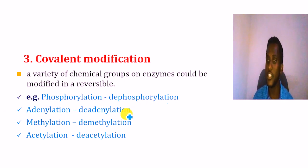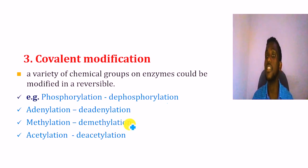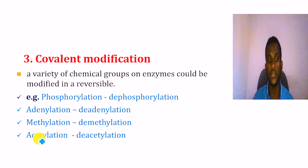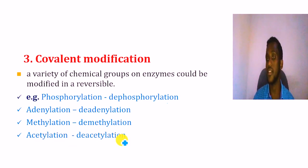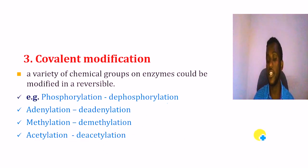Other types of covalent modification include adenylation and deadenylation, methylation and demethylation — where a methyl group is added or removed — and acetylation and deacetylation, where an acetyl group (CH3) is added to or removed from the enzyme, all of which regulate enzyme activity.